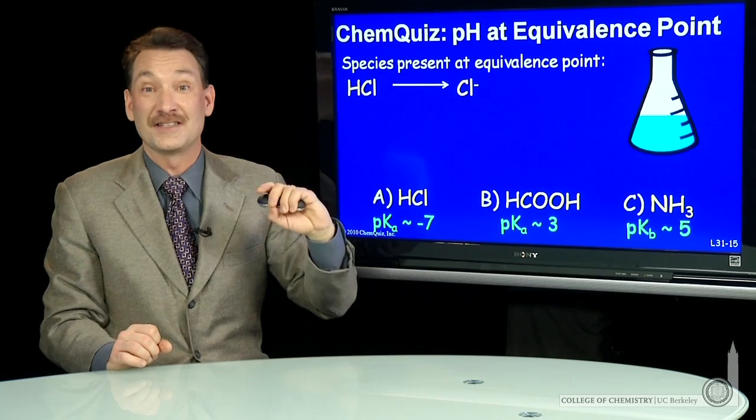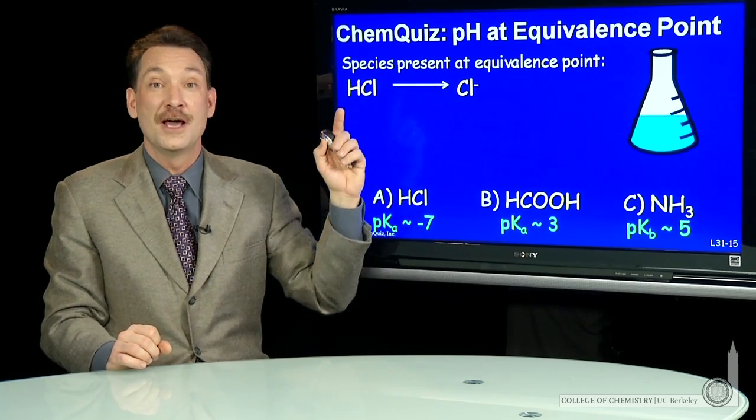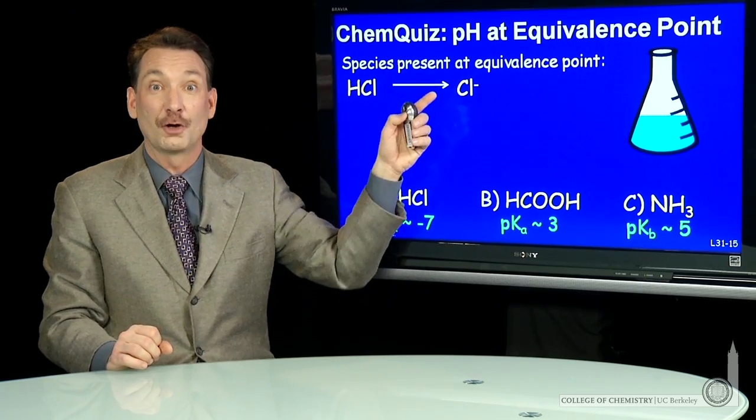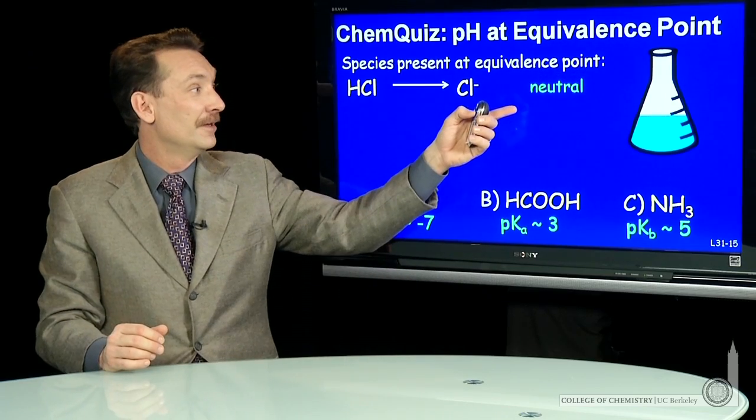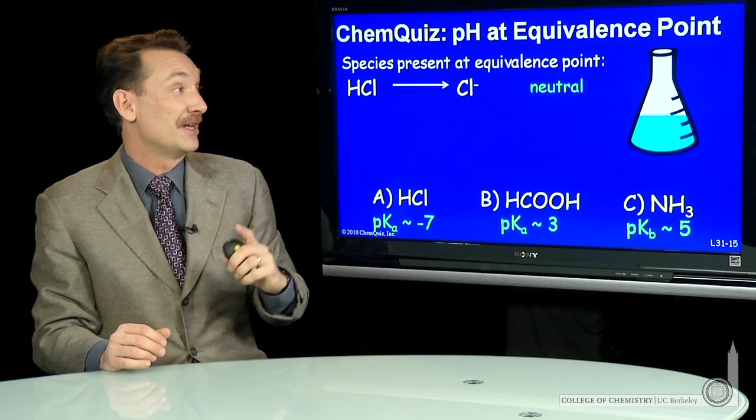In fact, this is not basic at all. You know a solution of sodium chloride, the chloride ion solution, will be neutral. So this will be around pH 7.